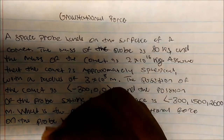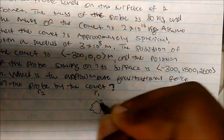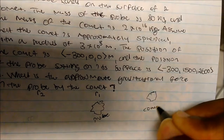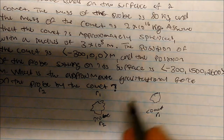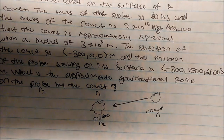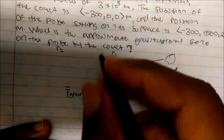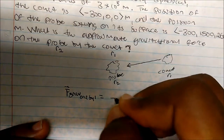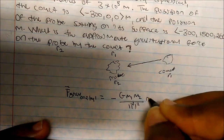The probe will be R2 and the comet will be R1. You could imagine we have the probe here and here's my comet. The gravitational force on the probe by the comet — on 2 by 1 — is equal to negative G, big G, times M1 times M2, divided by the magnitude of the radius squared, times the unit vector.